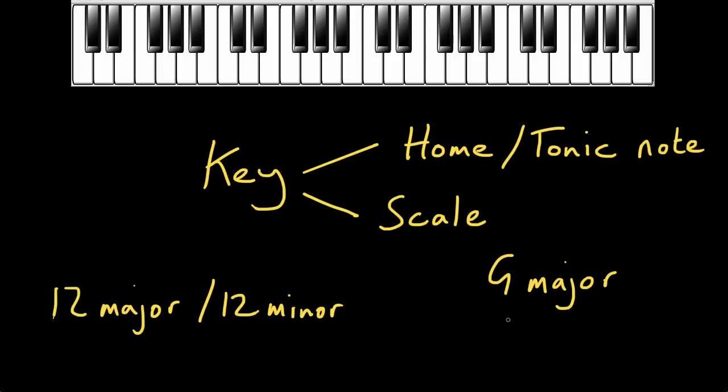If on the other hand someone told you you're going to be playing a piece in the key of G minor, well that's a little bit different. The key or tonic note is still going to be G, so that's going to still be the kind of centre of gravity for the music, but you're going to be using a different scale most likely and that will be the scale of G minor.